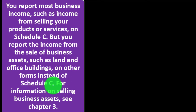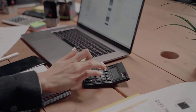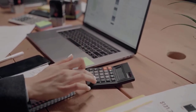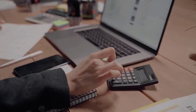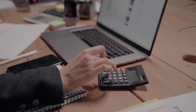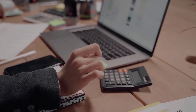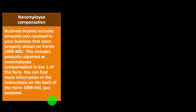If you have business assets, even if you're a cash basis business, remember that Schedule C is basically an income statement. We don't have a balance sheet on the tax return for a sole proprietorship, but we do have some balance sheet accounts — those being property, plant, and equipment in a sub-schedule, basically the depreciation schedule. If we sell something, those items might be reported on other forms. For more information on selling business assets, see Chapter 3.